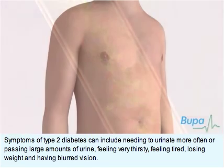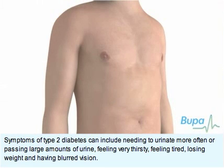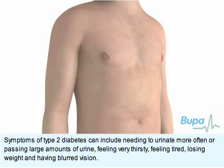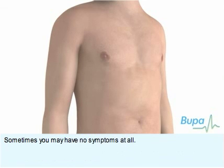Symptoms of type 2 diabetes can include needing to urinate more often or passing large amounts of urine, feeling very thirsty, feeling tired, losing weight and having blurred vision. Sometimes you may have no symptoms at all.